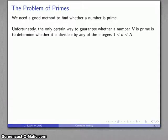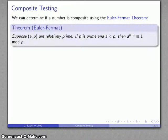Unfortunately, the only certain way to guarantee that a number is prime is to determine whether it's divisible by any of the integers less than itself. On the other hand, we can determine rather easily whether a number is composite using the Euler-Fermat theorem.